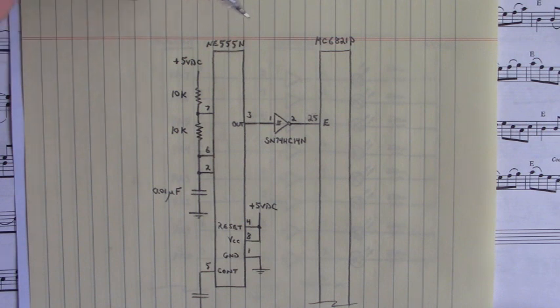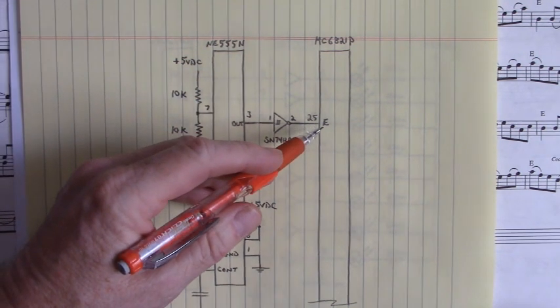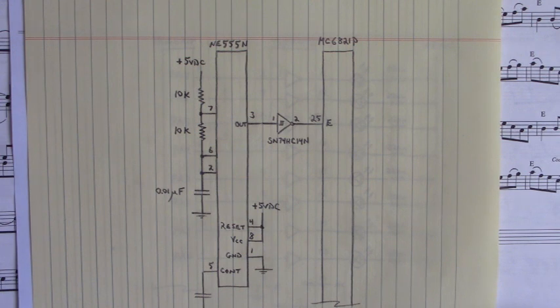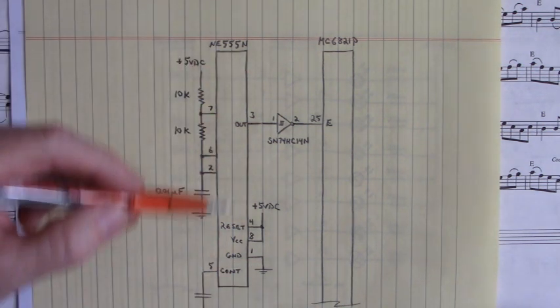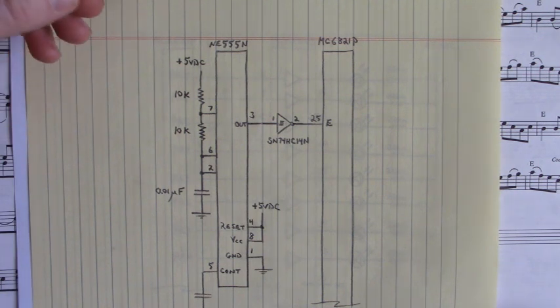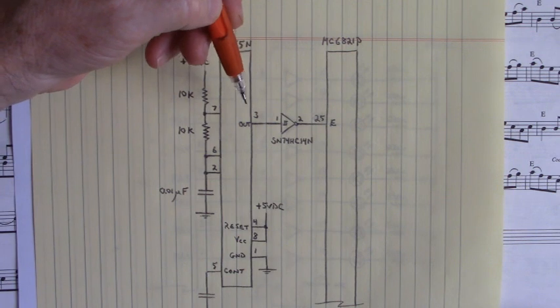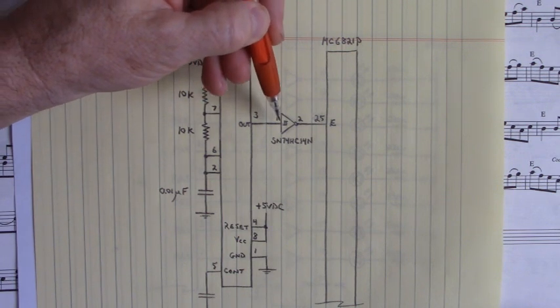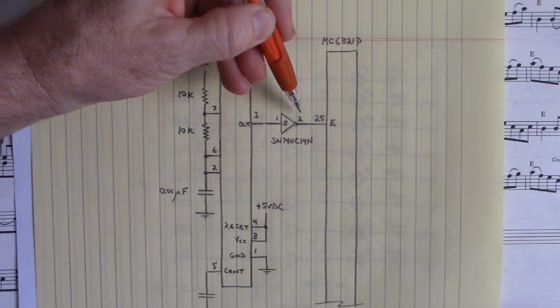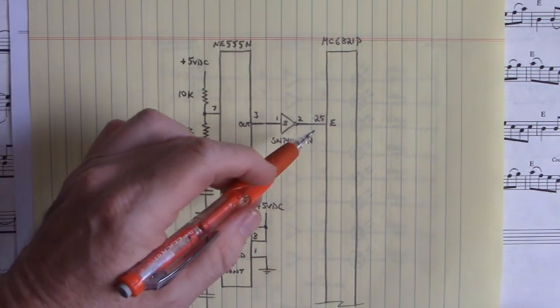Here on pin 25 of the MC6821P is the E clock input. This sets up the timing inside that IC in reference to the MC6802 or MC6809 microprocessor. But since the PIC16F877A does not have an E clock output, I generate that square wave from this NE555N in astable mode of operation. The output pin 3 goes to the input of the Schmitt trigger on pin 1, SN74HC14N. And the output pin 2 goes to the E clock input, the E pulse input 25.